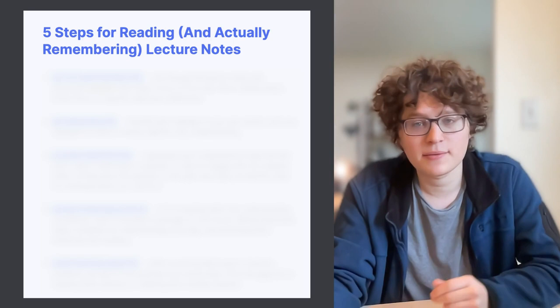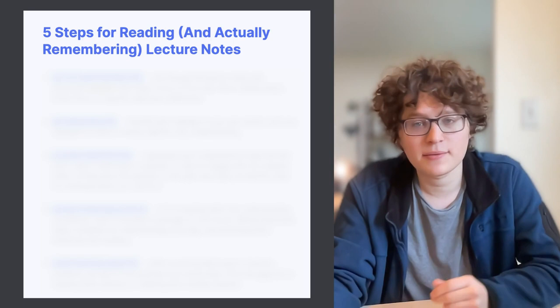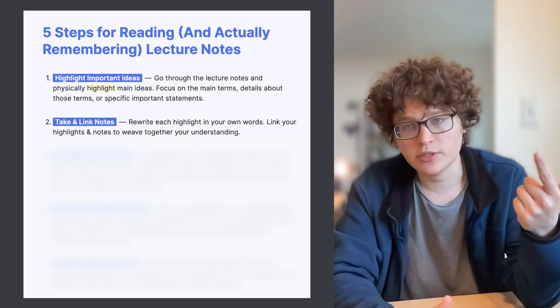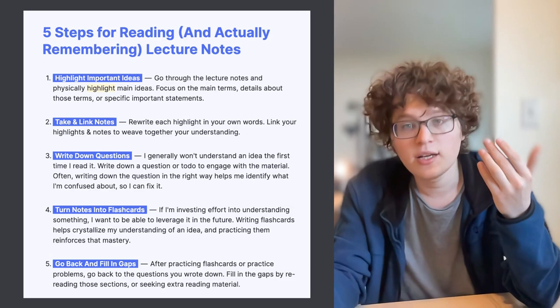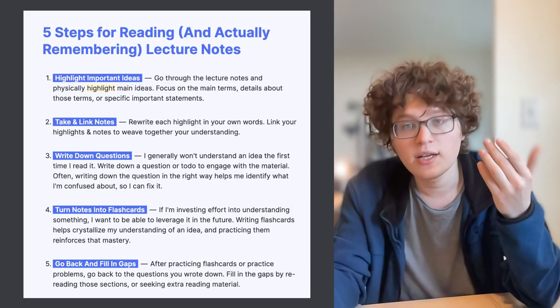Those are the five steps of my active reading process. I identify important information and highlight it. I take notes in the form of concepts and their descriptors. I write down to-dos and questions while I'm reading to actively engage with the material. This all generates flashcards that I then practice and review. And finally, I'll look over the material again and review it later — either that day or in the coming weeks — to re-engage with it and see if I'm still confused about anything.